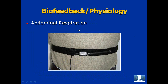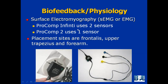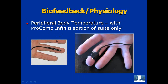In terms of the sensors you can use: there's the abdominal respiration sensor, which works for both encoders. We also have the BVP sensor — the blood volume pulse sensor — that measures heart rate variability. We also look at EMG, surface electromyography. For the ProCom Infinity, you record data for two EMG sensors simultaneously; for the ProCom 2, we only ever look at one EMG sensor. The placement sites are the frontalis, trapezius, and forearm depending on the exact exercise. For the ProCom Infinity only, we look at peripheral body temperature, though we barely use it. For the ProCom 2, we didn't include temperature at all.